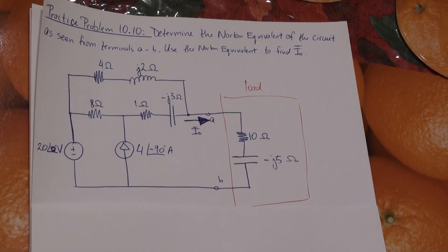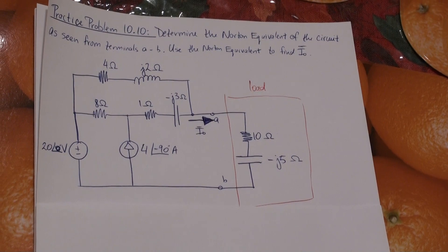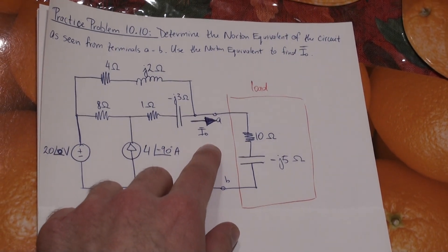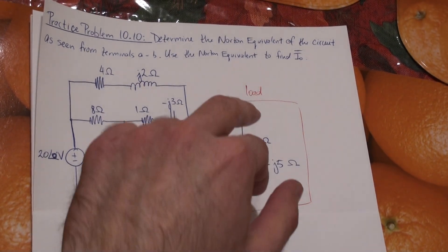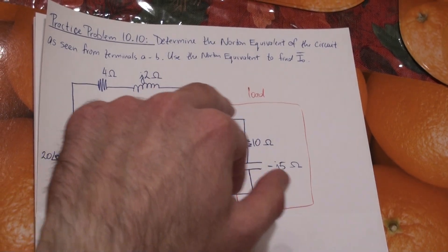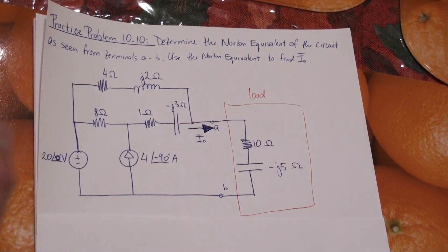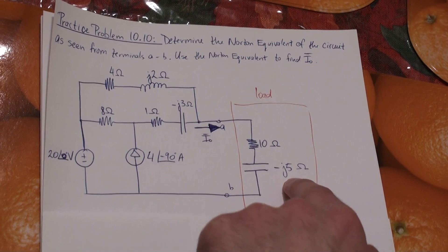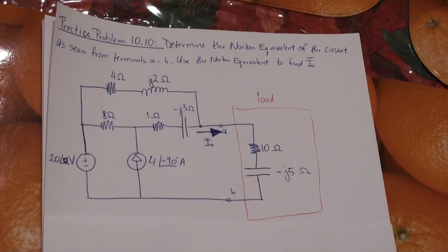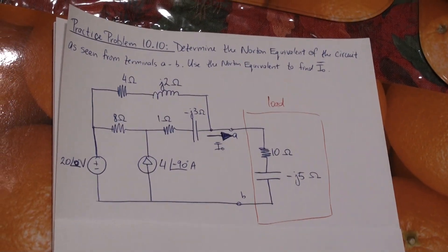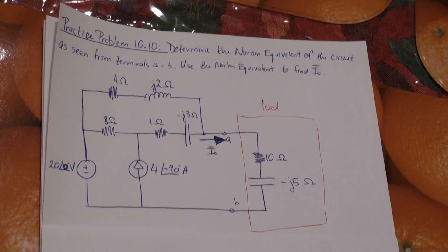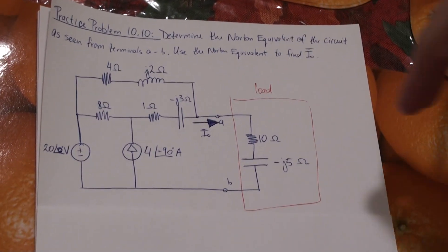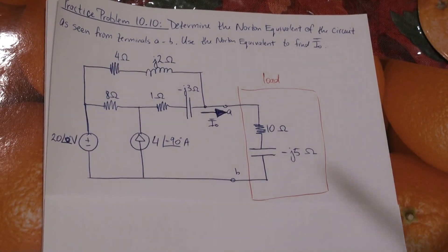We also have to use that Norton equivalent to find I0. The part connected to AB — the 10 ohm resistor and minus J5 capacitor — is our load. So before we evaluate the Norton equivalent, we need to remove the load from the circuit.